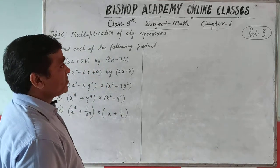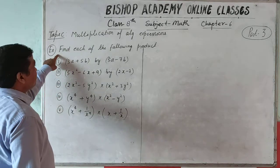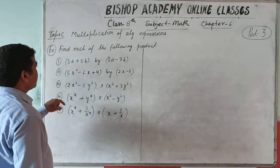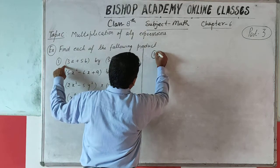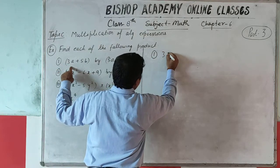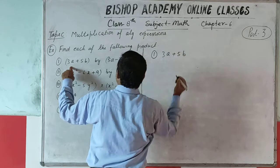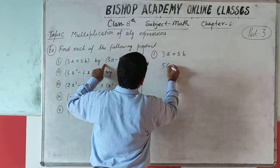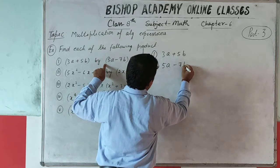Part G. For example, find each of the following products. Question number 1: (3A + 5B) multiplied by (5A - 7B).